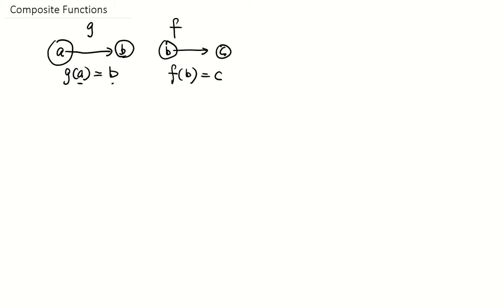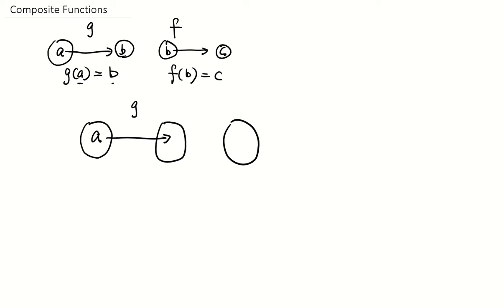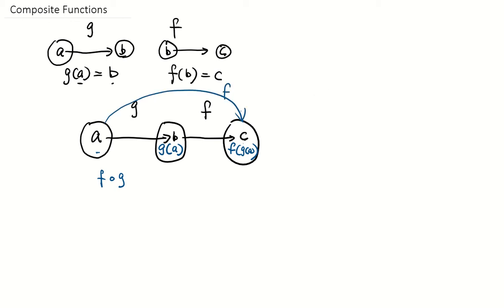So say we have this function. First, we have the function g that maps a to g of a, because b is g of a. Then we have the function f that maps b to c. In other words, we're mapping g of a to f of g of a. So f of g is a function that maps a to c. This function is the composition of f of g.